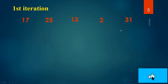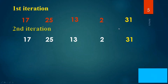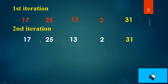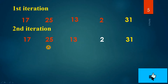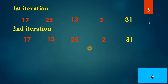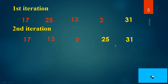Now come to the second iteration. Notice that the greatest element is now at the last position. In the second iteration, repeat the same procedure. Compare 17 with 25 — 25 is greater than 17, so no need to swap. Then 25 with 13 — 13 is less than 25, so swap. Then 25 with 2 — 2 is less, so swap. Now 25 and 31 are in their correct positions.